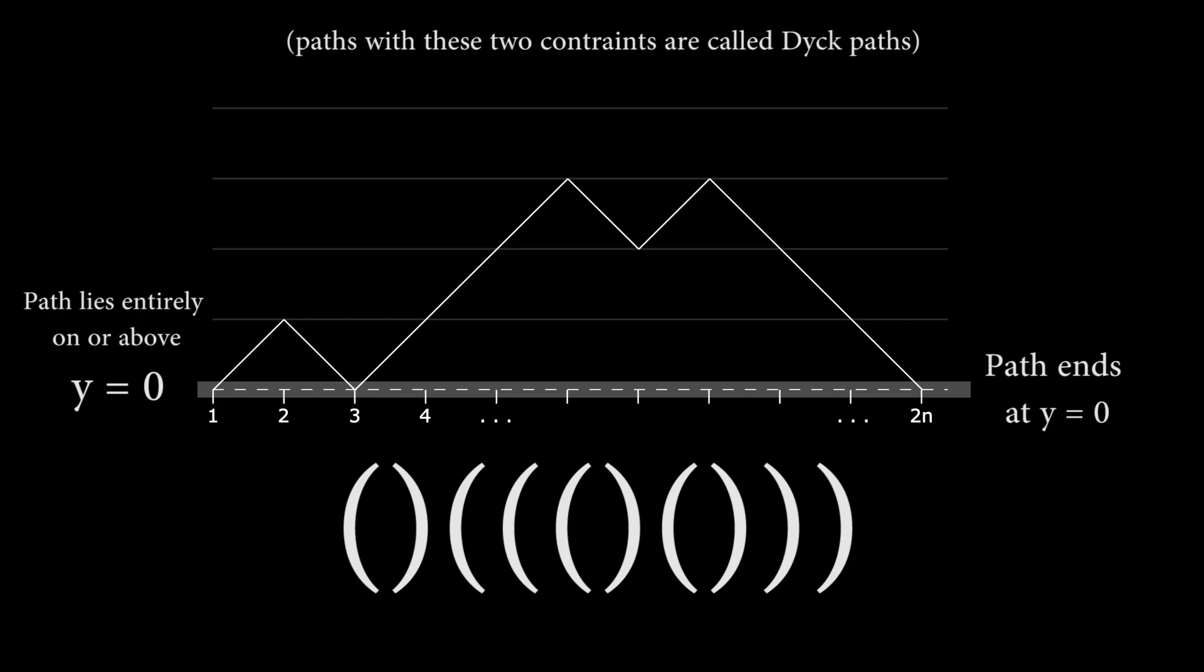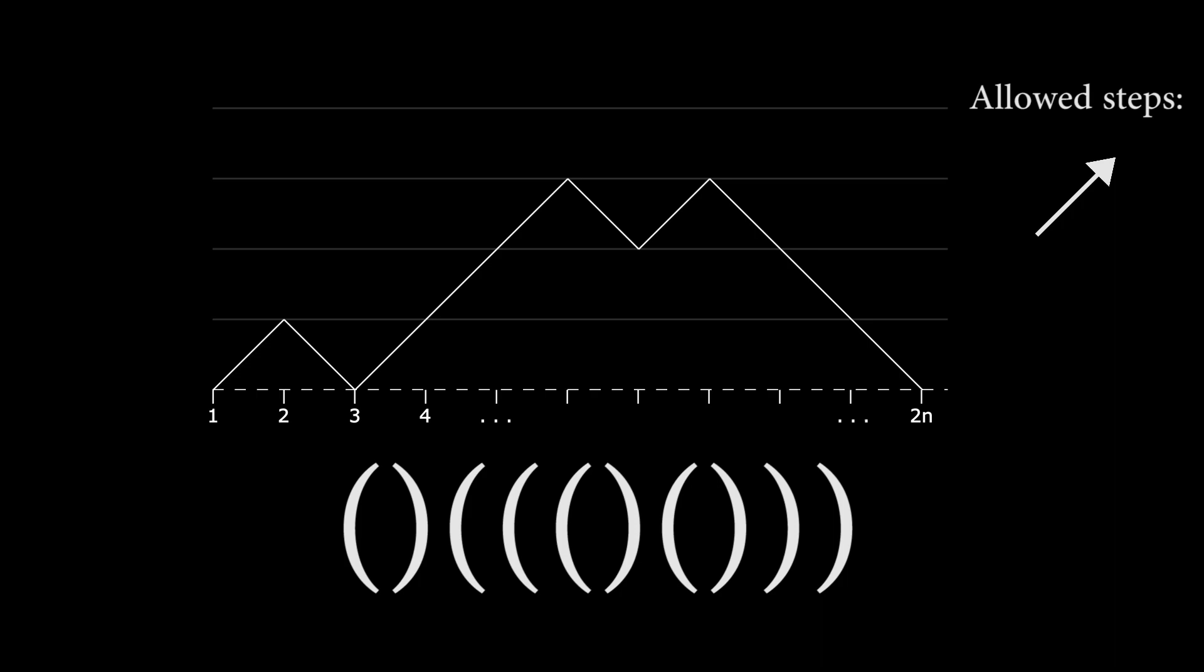Also, remember that the only two steps we're allowed to take are up and to the right, or down and to the right. We can't go backwards. And now we've completely transformed the original problem into something that's easier to think about and work with. To answer the question of how many valid arrangements there are with n pairs of parentheses is equivalent to asking how many walks there are following the aforementioned constraints that end at the point labeled 2n.